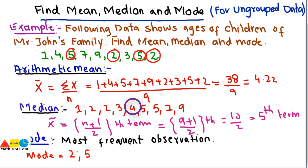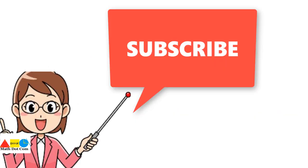So mode equals 2 and 5. So this is how you can find the mean, median, and mode of the ungrouped data quickly. So that's all from today's lecture. Thank you. Thank you for watching. If you like this video, please don't forget to subscribe our channel mathplusclass.com for more updates. Thank you.